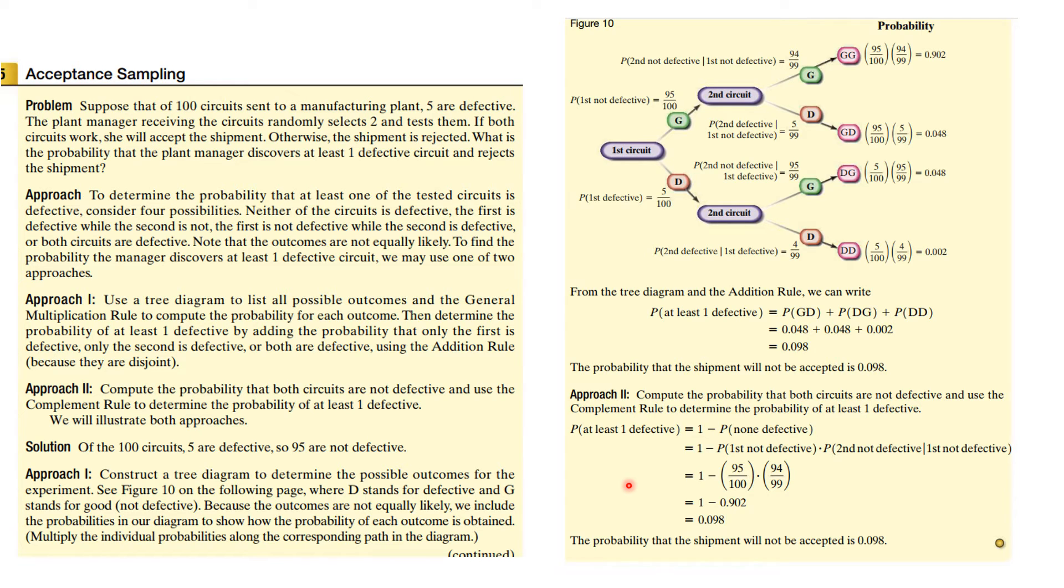But another approach and a smarter approach, less calculation, would be to use the rule of complements that we learned. So the probability of at least one defective is one minus the probability that none are defective. And the probability that none is defective is the probability of the first is not defective times the probability of the second is not defective given the first is not defective. And you see, you do get the same answer for this. So this is the probability that the shipment is not accepted.